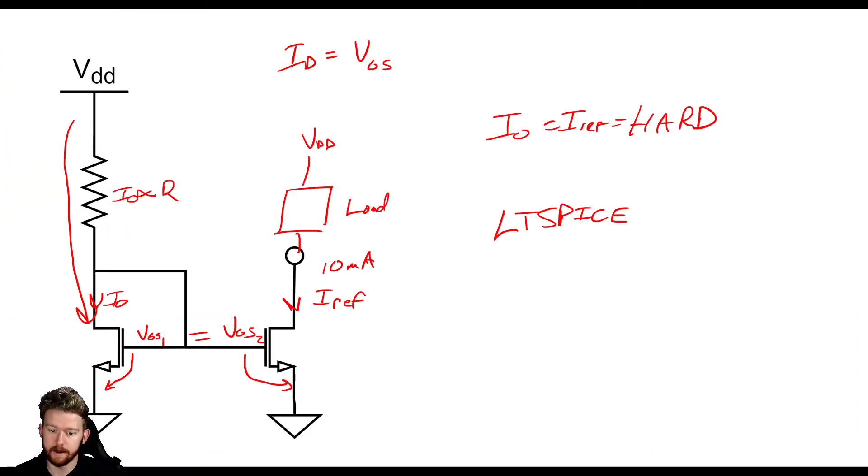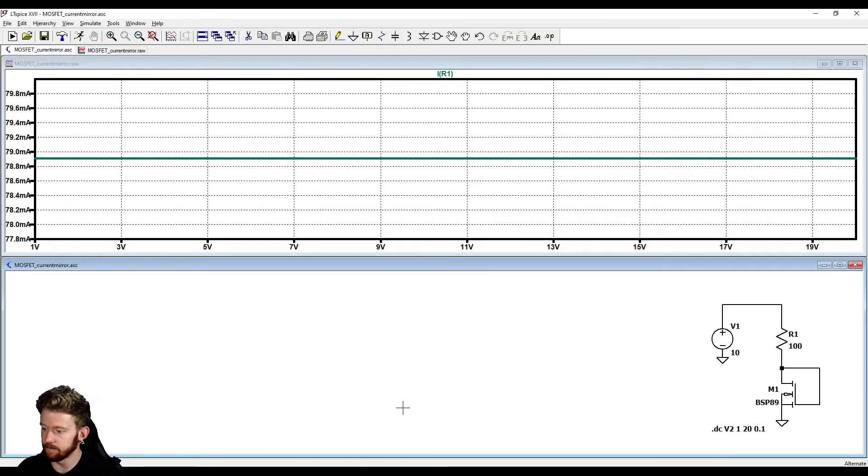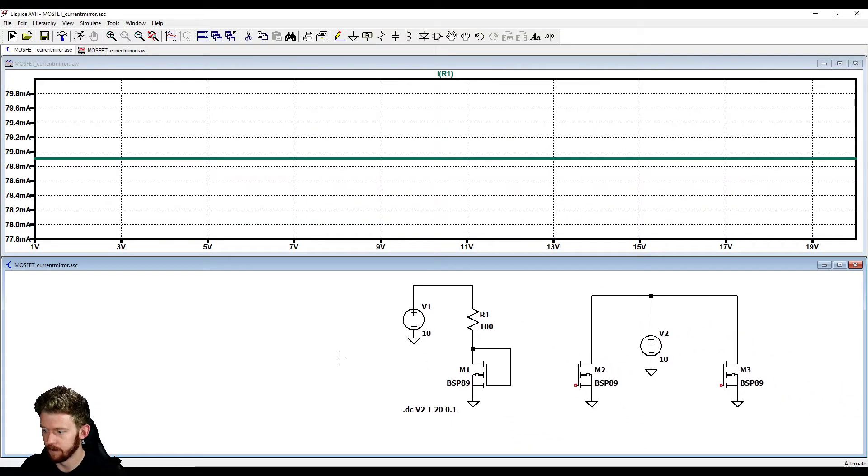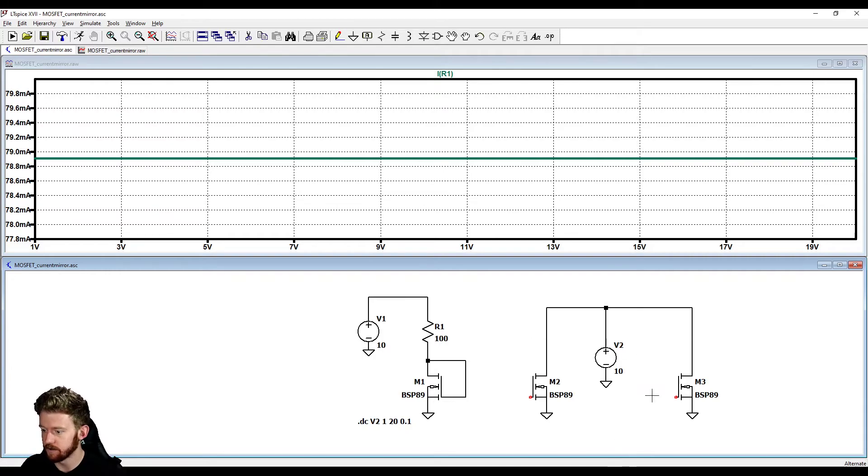So now if we look back here all we have to do is connect that gate to the gate of another MOSFET. So that's what we're going to do here. So let me scoot over you can see I actually have two more MOSFETs wired up here but their gates aren't wired at all. So if I just connect the gates together and click run once more we're still getting that same 79 milliamps here.